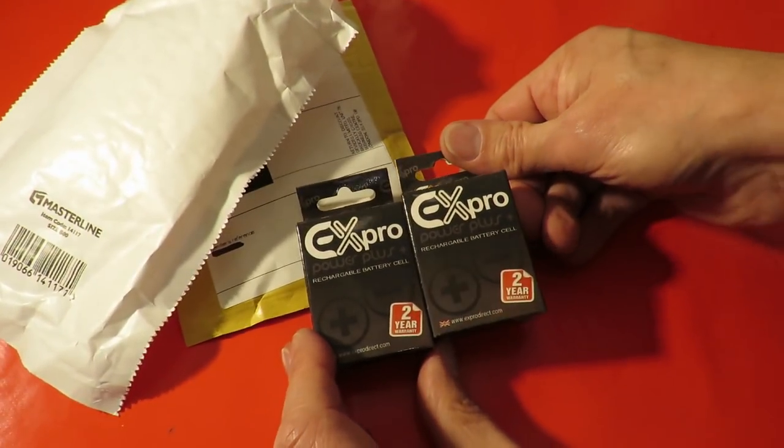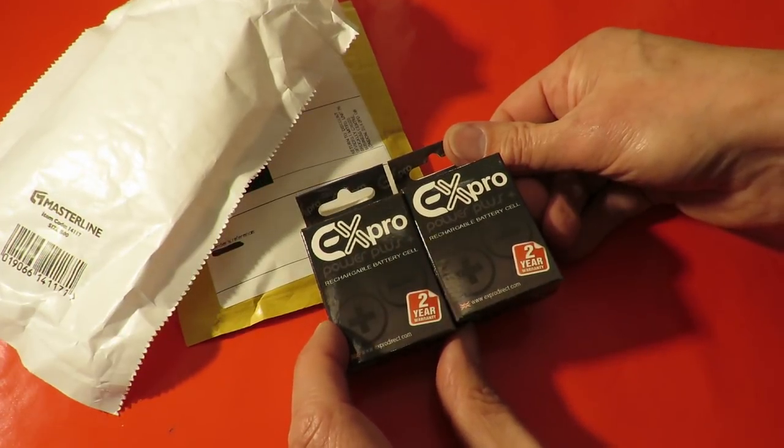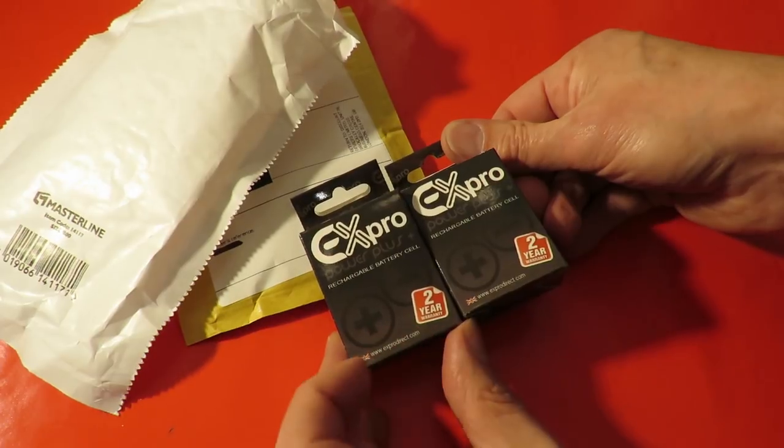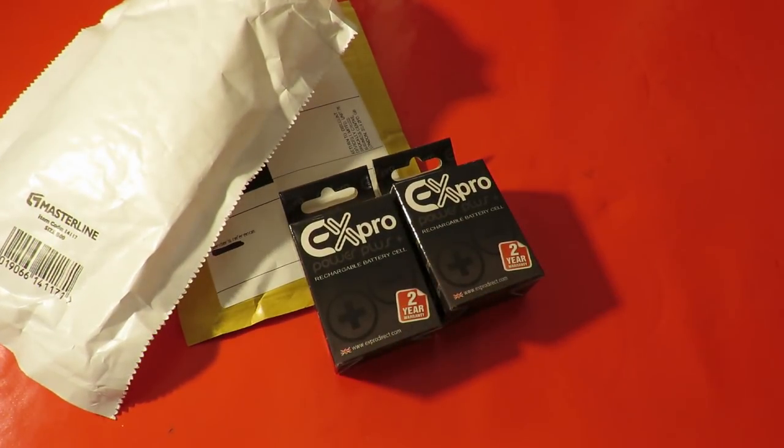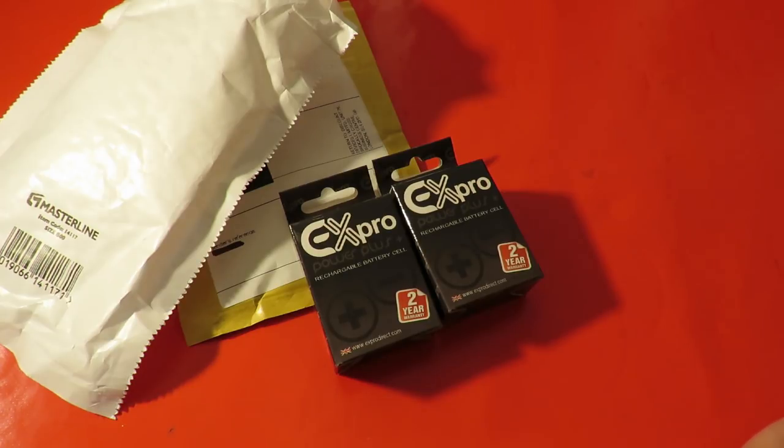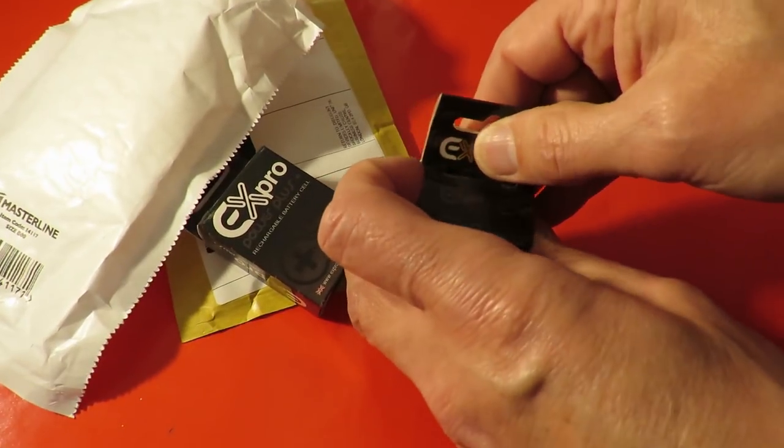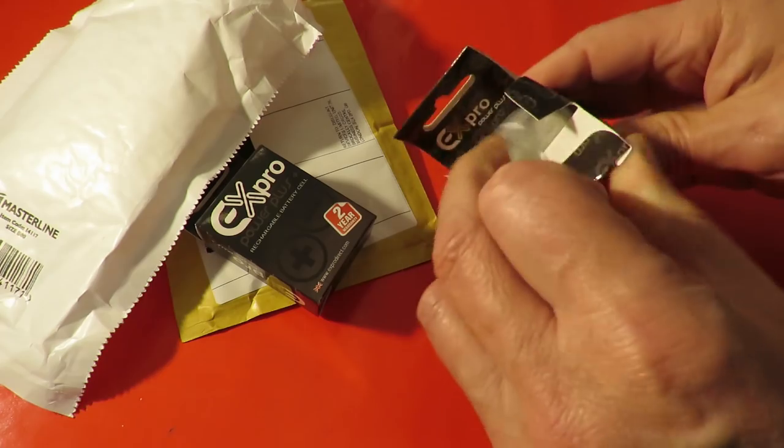So what we got here is the EX Pro Power Plus rechargeable battery, two-year warranty. It cost me £9.97 for the pair, about a tenner, whereas each individual one brand new is more than that if you get the proper Canon one.